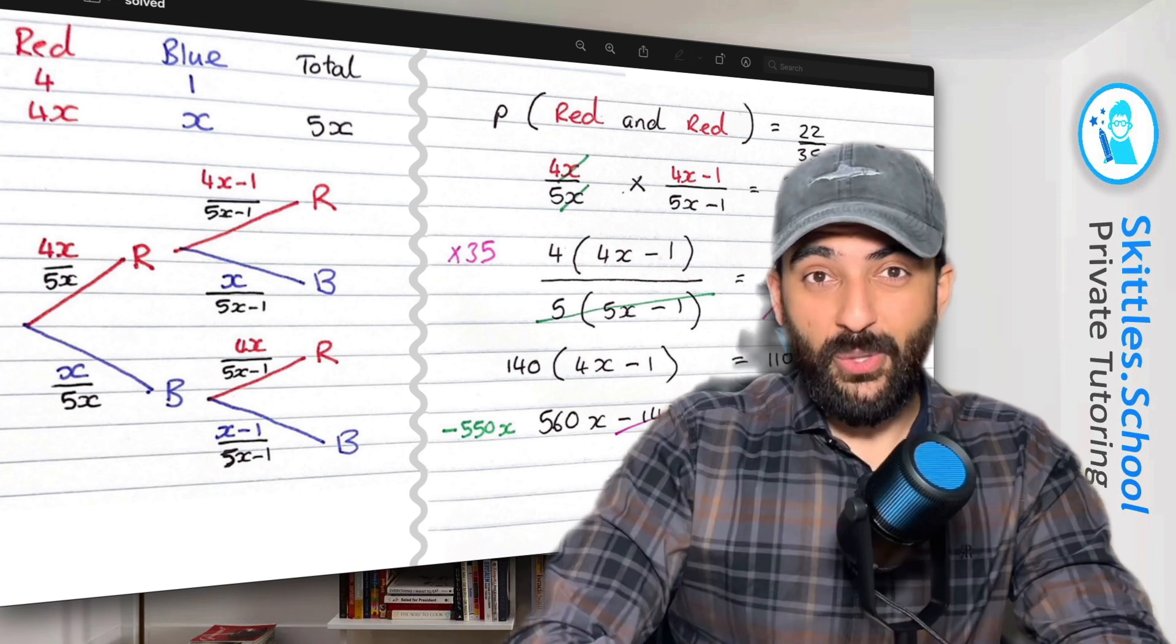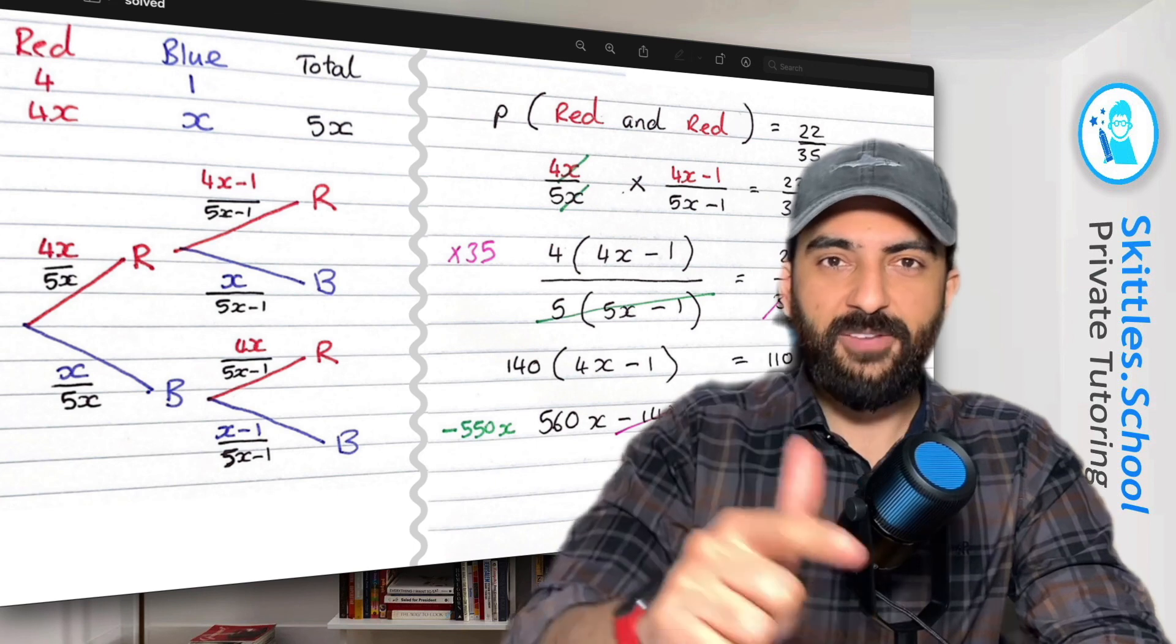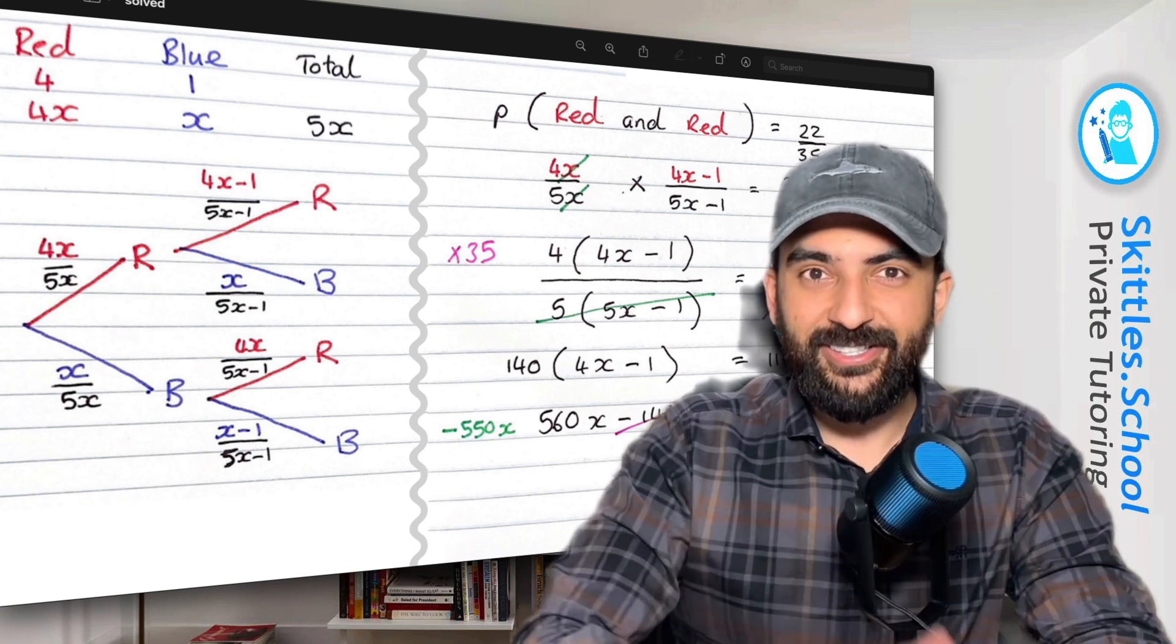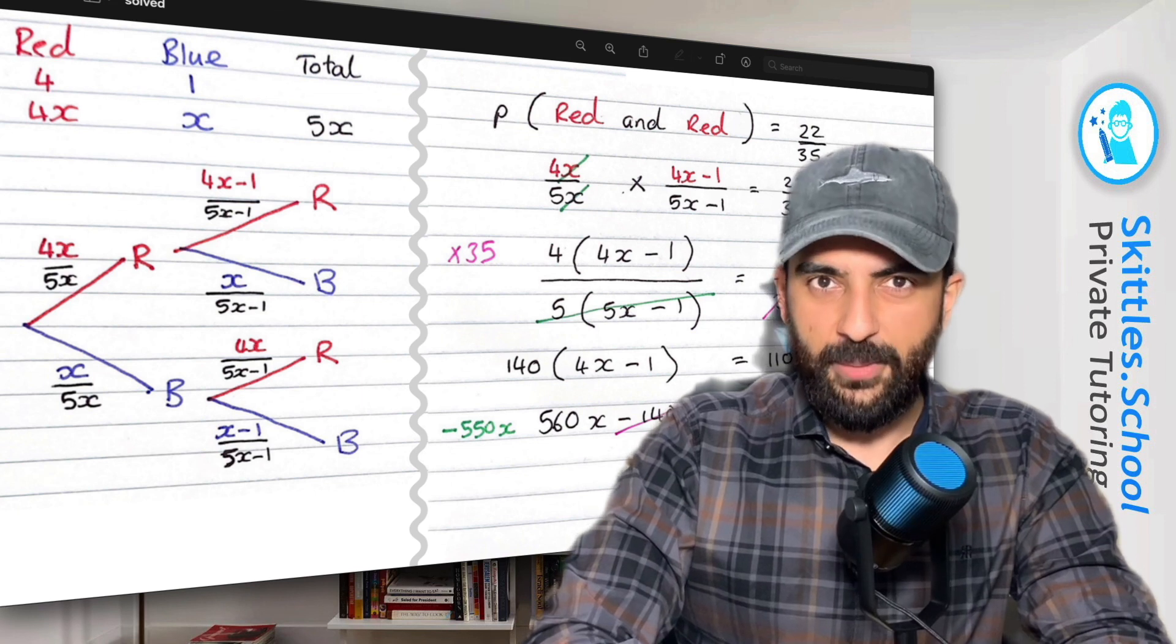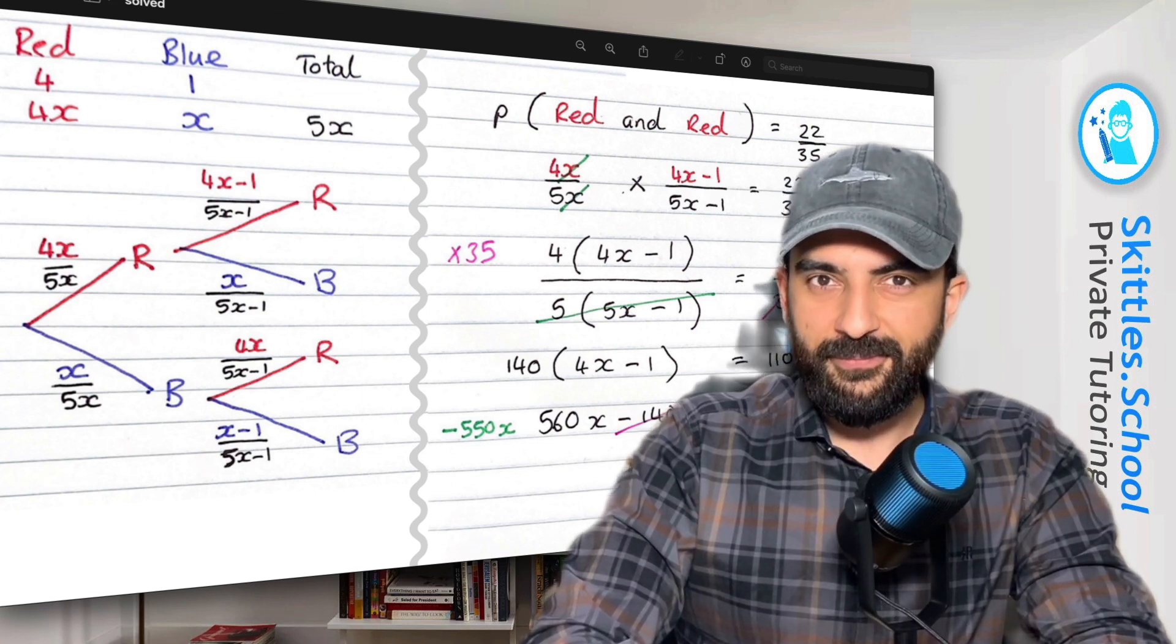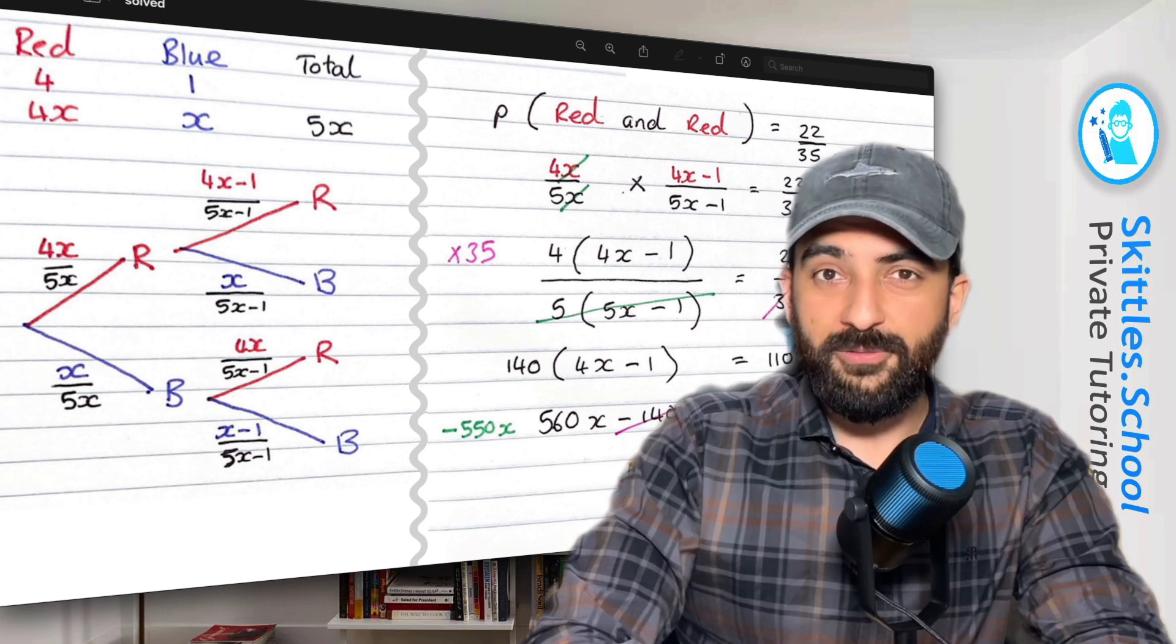The key skills that we've used today are probability trees and algebra. If you want me to go through a video solution for your question, send it to me using the details in the description. And if you are interested in private tutoring, visit our website skittles.school to book a free demo lesson.